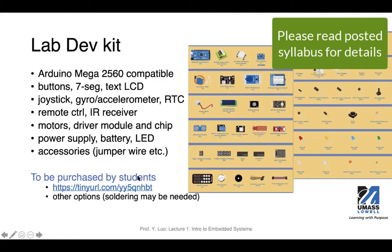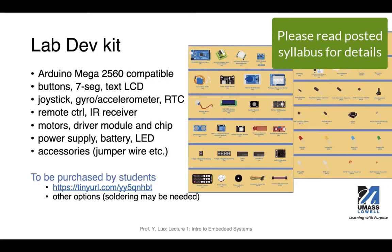There are two purchasing options on Blackboard. One link takes you to the complete kit on Amazon. The other option allows you to buy individual parts, but be aware that for some parts you will need to do soldering yourself, as they may come as separate pieces. With the full kit, everything has already been soldered, so you can plug modules like the RTC module directly onto the breadboard. If you have additional questions about the development kit or individual parts, we can talk about it individually after the session today.